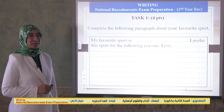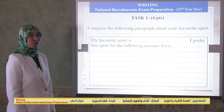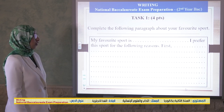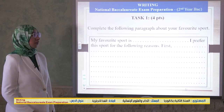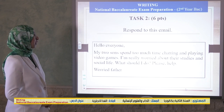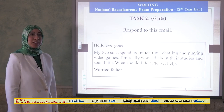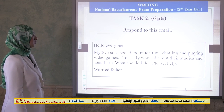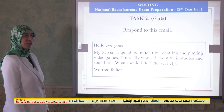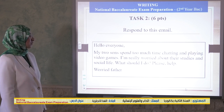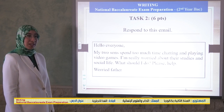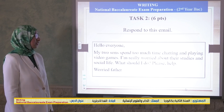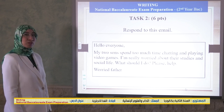We have two tasks. Task number one takes four points out of 10: complete the following paragraph about your favorite sports. Task number two takes six points out of 10: respond to this email — 'Hello everyone, my two sons spend too much time chatting and playing video games. I'm really worried about their studies and social life.'